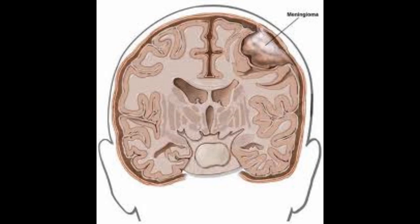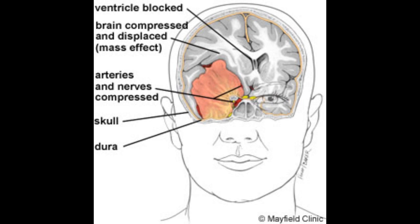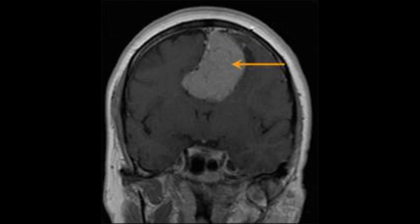Meningioma tumors are the most common primary brain tumor and occur mostly in the middle-aged or elderly. Meningioma is a tumor in the meninges and they are mainly slow-growing tumors. Meningiomas in the frontal lobe can cause mood and personality changes and hemiparesis. If the temporal lobe is affected, it can cause memory and coordination problems. If the parietal lobe is affected, writing will become difficult, and if the left side of the brain is affected, there may be speech problems such as slurring words. Meningioma tumors account for 29.2% of all tumors.